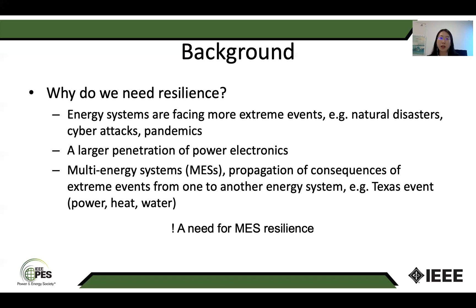Our energy systems are now strongly coupled, and we call it a multi-energy system. This multi-energy system can include energy systems like district heating, natural gas, and power systems through coupling technologies — for example, combined heating and power plants, gas turbines. Because of this strong coupling, such extreme events can cause cascading failures in different energy systems leading to even worse impacts.